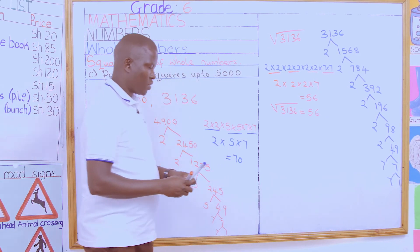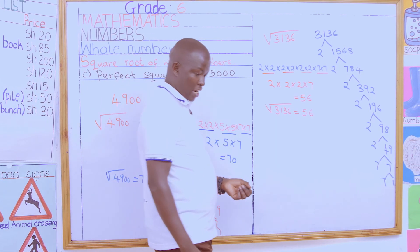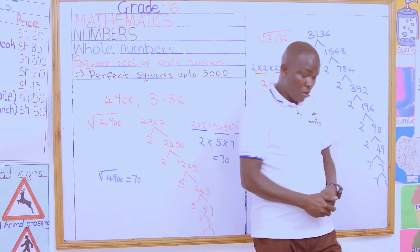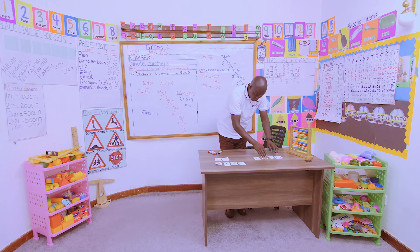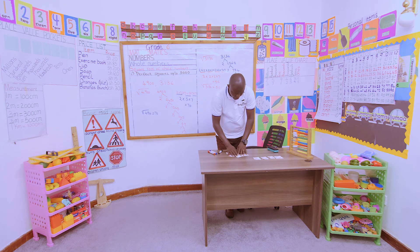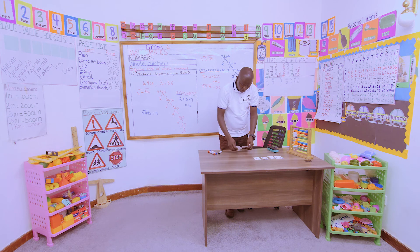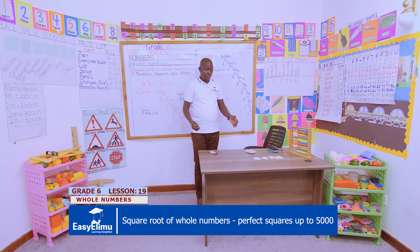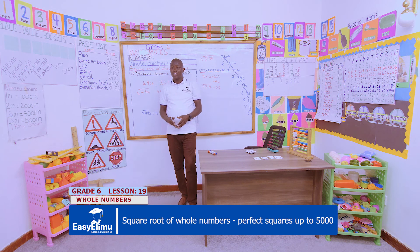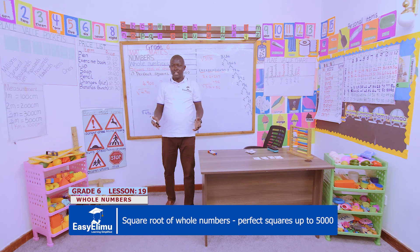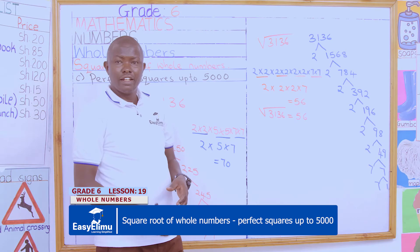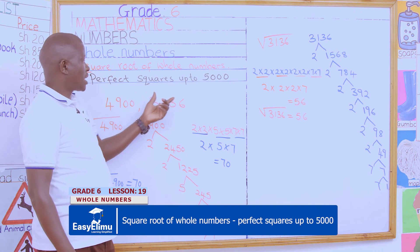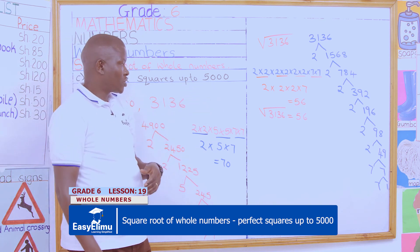That is how we arrived at the answer using the factor method for perfect squares. You can also work out the square root of 2,500 on your own at home. Before we conclude, learners, go to the internet at home with the help of your parents and try to look for number games involving square root of perfect squares up to 5,000, then work out the games.